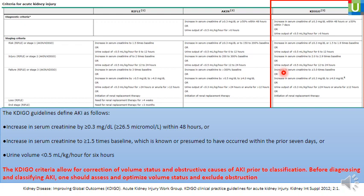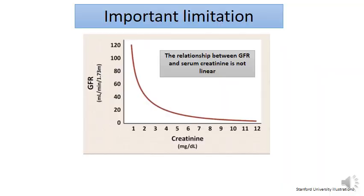The latest KDIGO criteria define AKI as an increase in serum creatinine of more than 0.3 mg/dL within 48 hours, or more than one and a half times the baseline, or a reduction of urine volume below 0.5 ml/kg/hour for six hours. The KDIGO criteria allow correction of volume status and obstructive causes of AKI prior to classification. Before diagnosing and classifying AKI, one should assess and optimize volume status and exclude obstruction, because criteria depend on serum creatinine rise and urine output — and if reduced output is due to obstruction, it is a problem of retention, not truly reduced excretion.